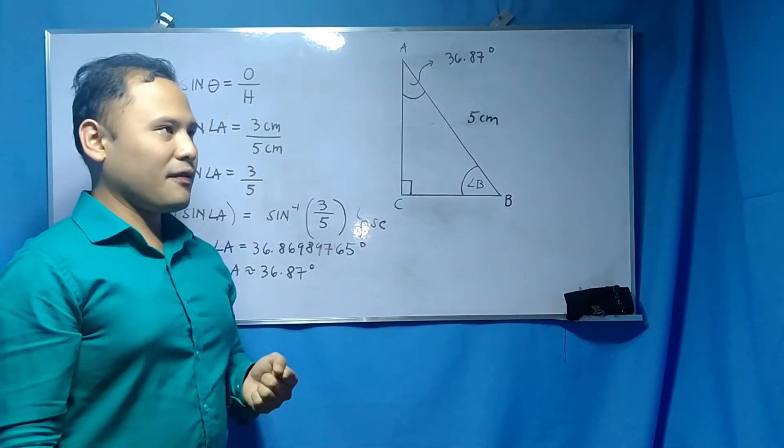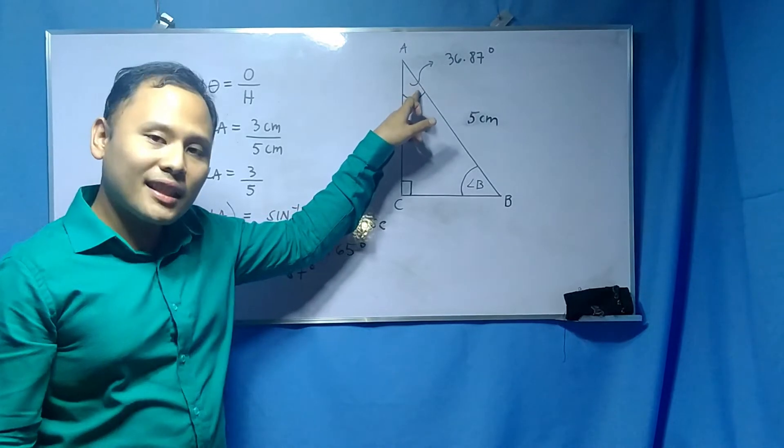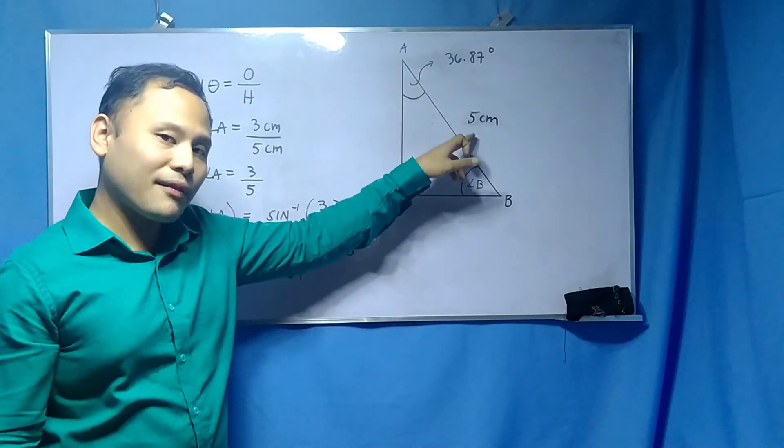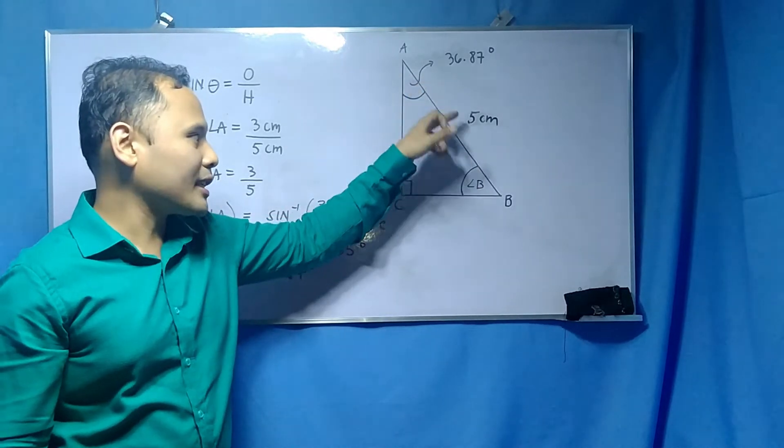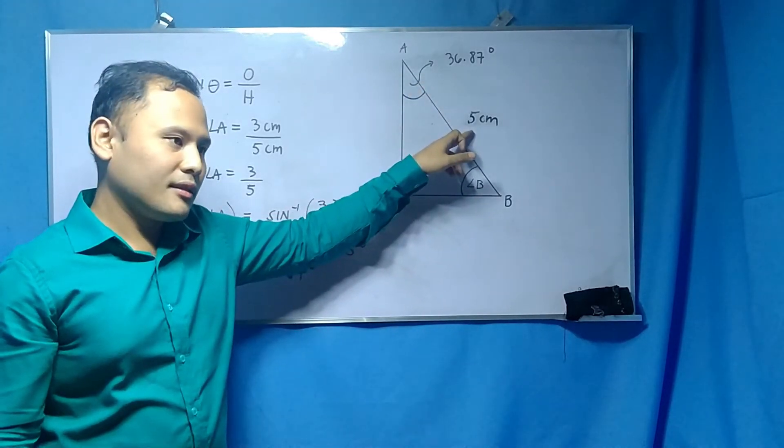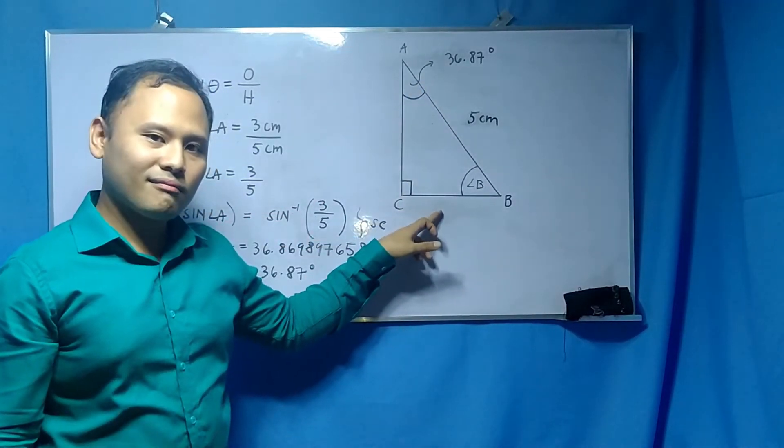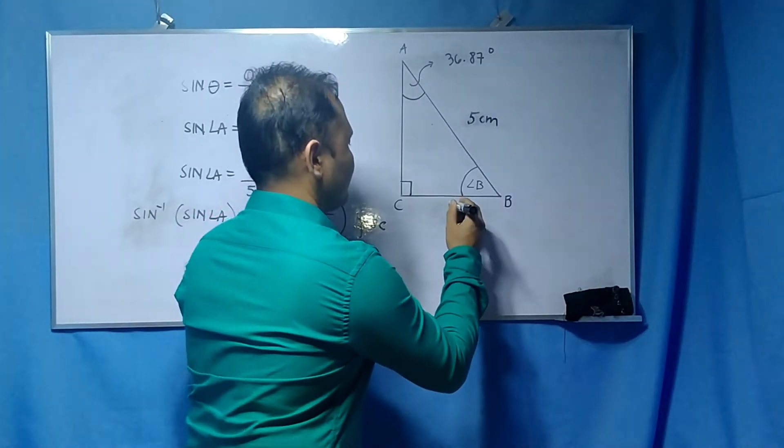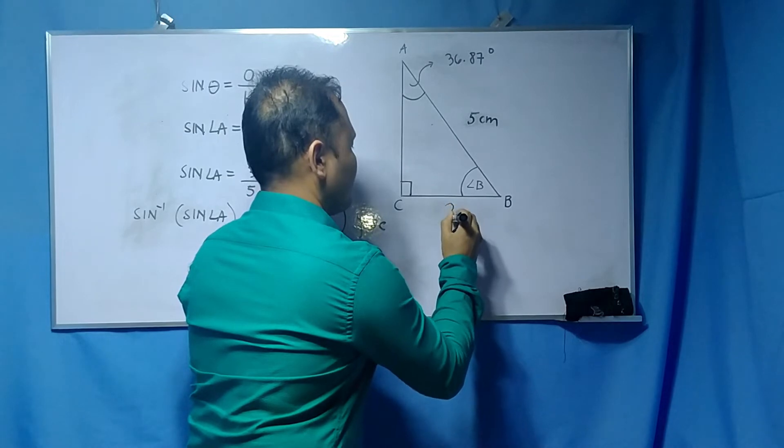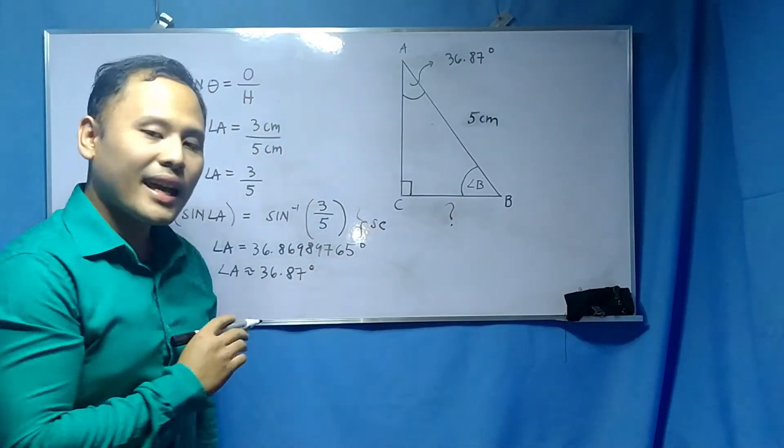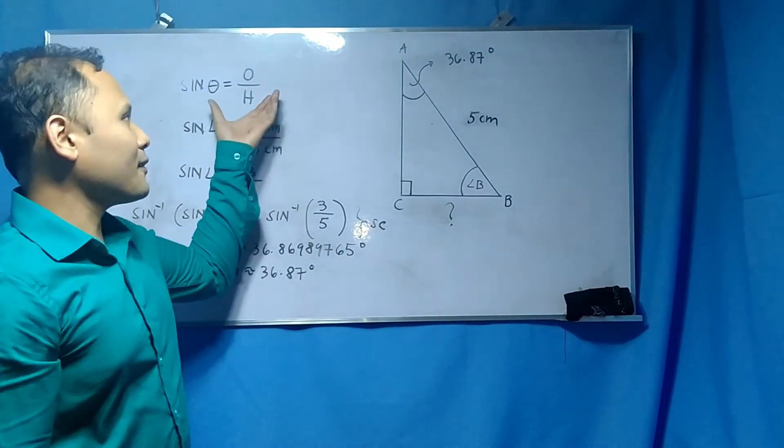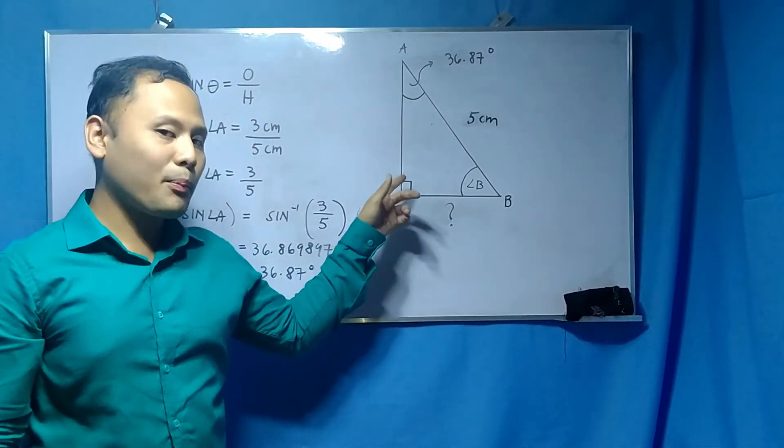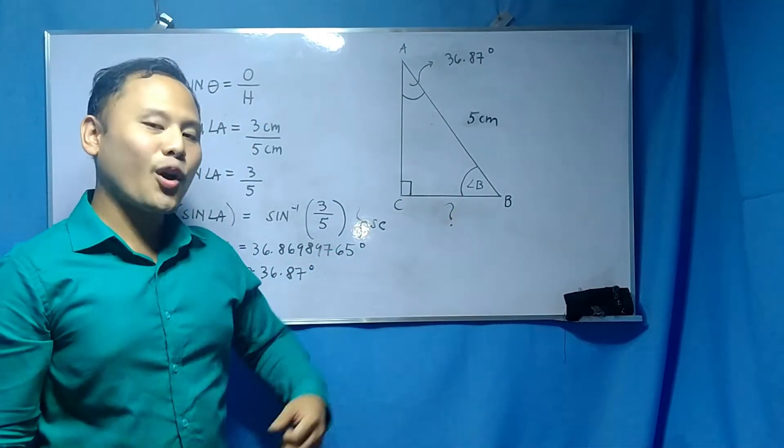But how about if this angle is given, the measure of the hypotenuse is also given—this is the measure of the hypotenuse that is 5 cm—and this is missing. So we put a question mark here. Again, we can use the sine function to solve for the missing leg or the opposite. I will show you the solution.